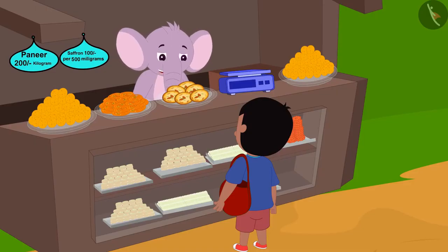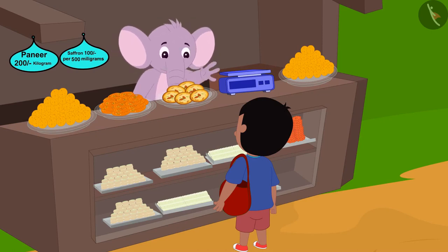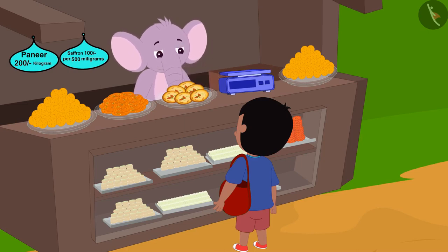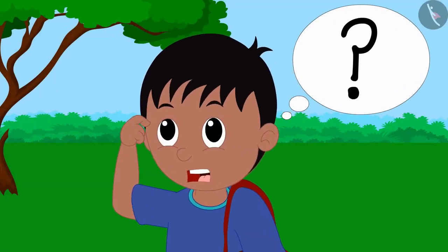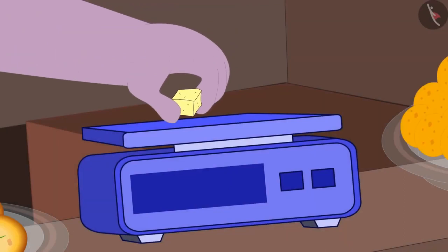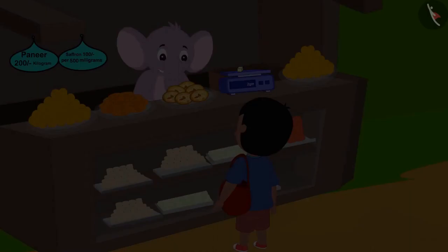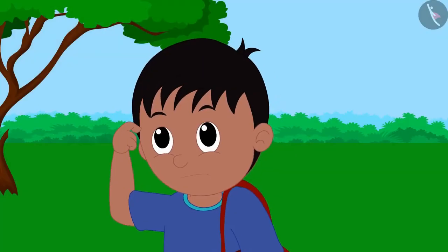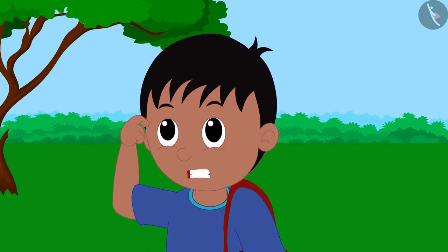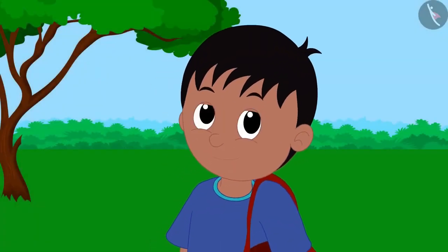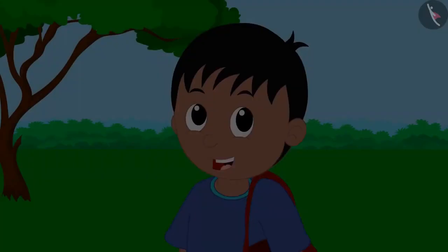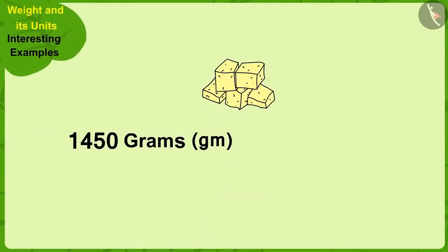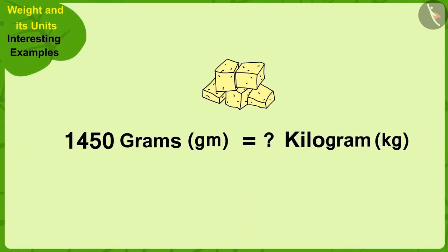Appu laughed and placed 2 grams of paneer on a weighing scale. Raju, will your mother be able to make any dish using this? No, looks like I swapped the units of these two items. Now Raju read the board: paneer costs 200 rupees per kilogram. Mother had asked me to bring 1450 grams of paneer — how many kilograms would that be?